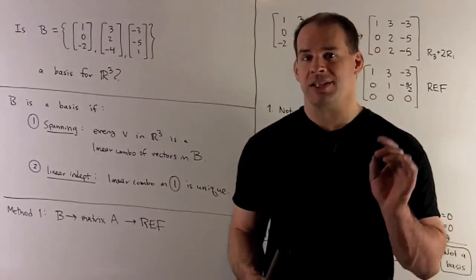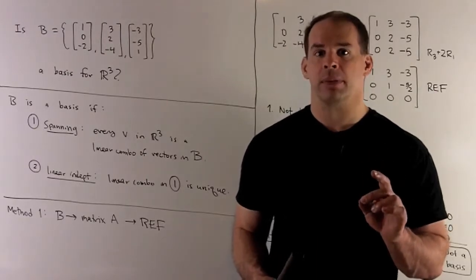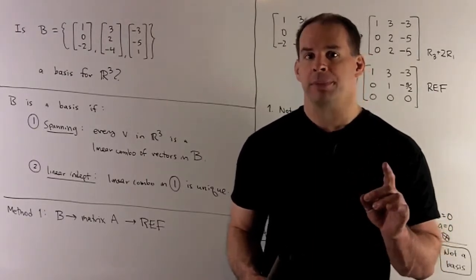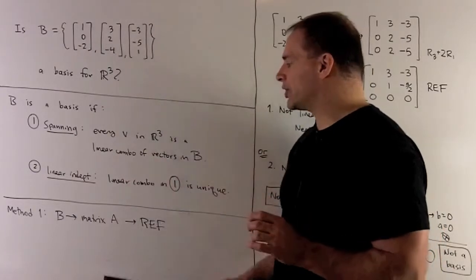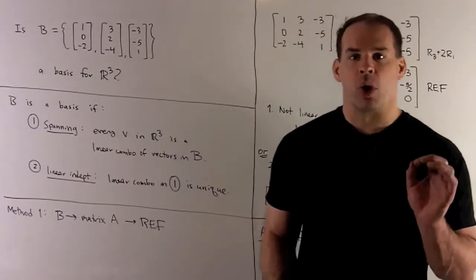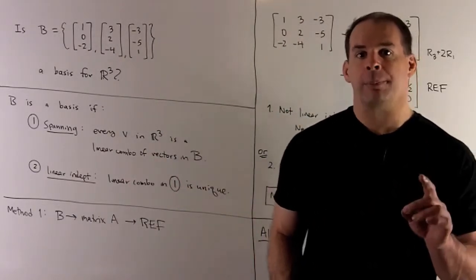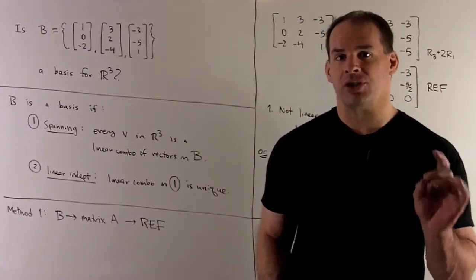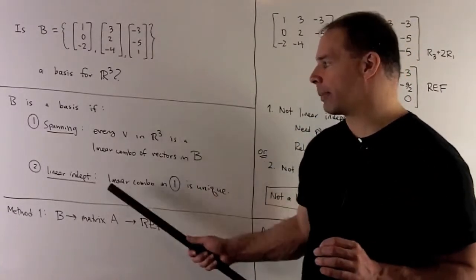We have two methods to check whether we have a basis. For method one, we put our vectors into a matrix A, then go to row echelon form. From there, we look at the pivots, which will determine whether we have both properties.